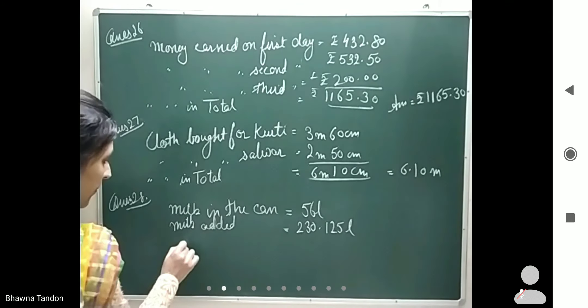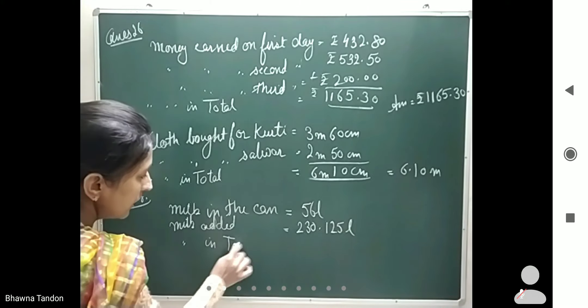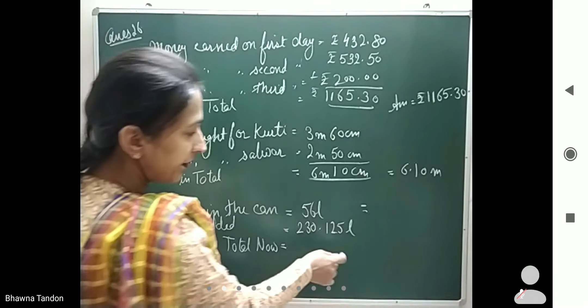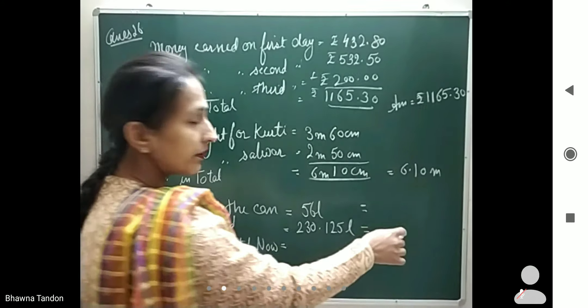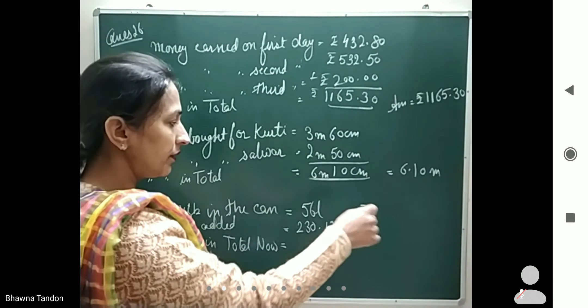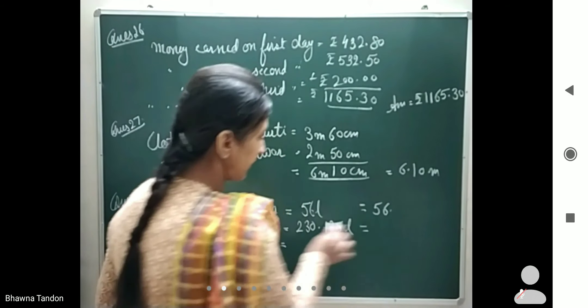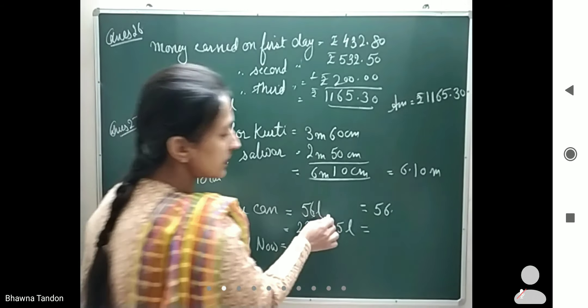Then milk in total now. I can add it like this, or I can convert to liters or milliliters, as per my wish. Now I am doing it directly. It is only in liters—nothing after the decimal for 56.